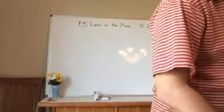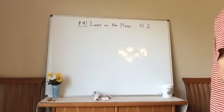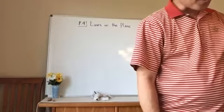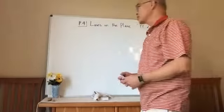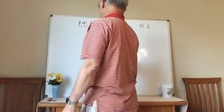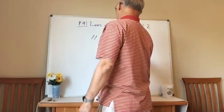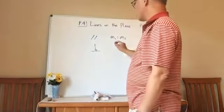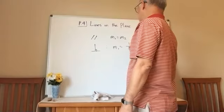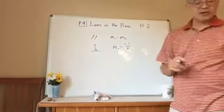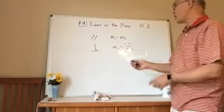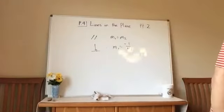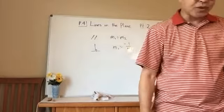So in algebra 1, pre-algebra, honors algebra 2, you talked about the slope relationship between the slope and the parallel line, right? So if it's parallel, the slopes are the same. If they are perpendicular, the slopes are the opposite reciprocal. In other words, m1 times m2 should be negative 1.